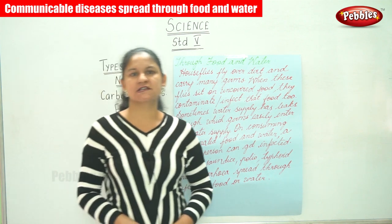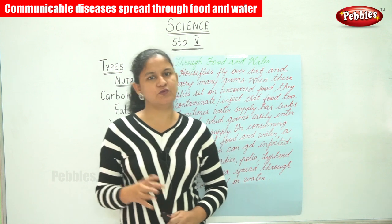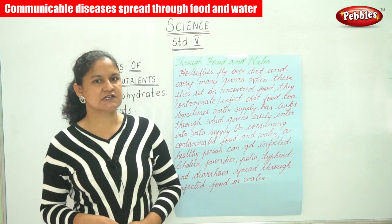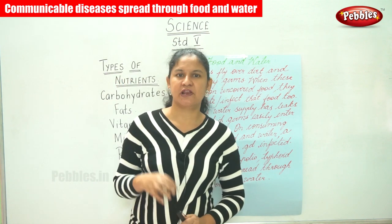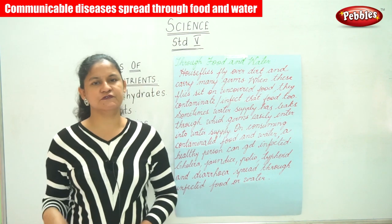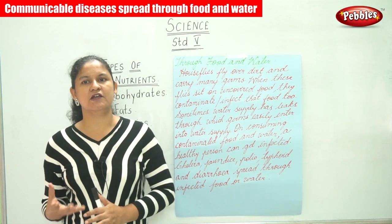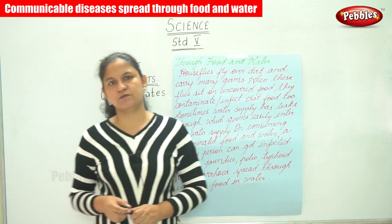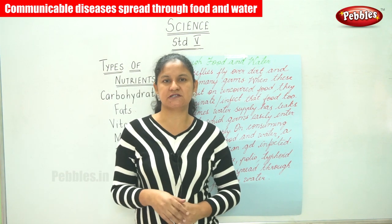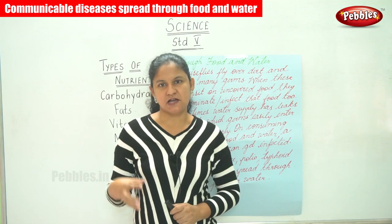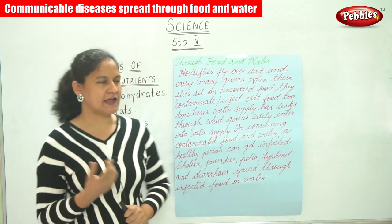Communicable diseases can be spread through various ways. First is through direct contact or through air. When an infected person coughs or sneezes, the germs either settle on their clothes or spread in the air, and a normal healthy person may contract this either by touching the infected clothes or through the air.